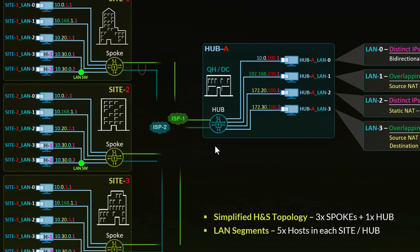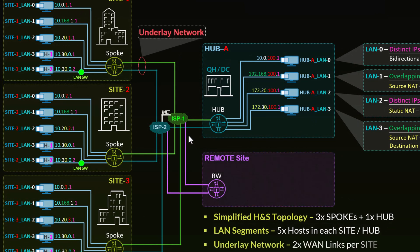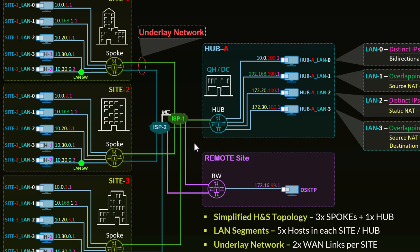If we look quickly at the underlay topology: as discussed, we have two physical links in each and every spoke and on the hub, and we have two ISPs. They might be connected if it's internet connectivity, not necessarily an MPLS private network. I also included an emulation for a remote site — a host at 172.16.99.0 — that I'll be using to show destination NAT from the underlay network reaching one of the LAN segments on the hub. This is a typical use case where you have a web server on the hub LAN side that you'd like to have access to from the internet or from specific IPs.